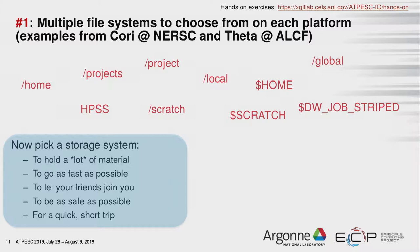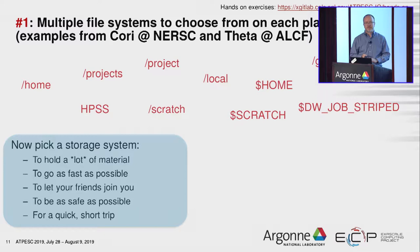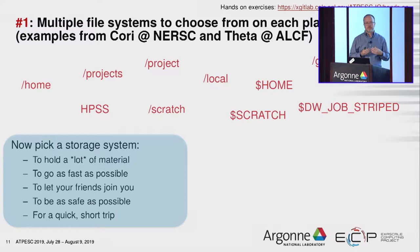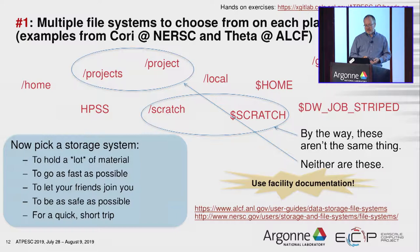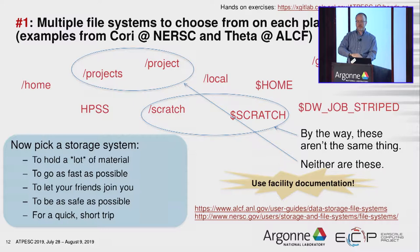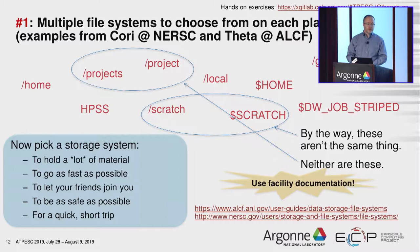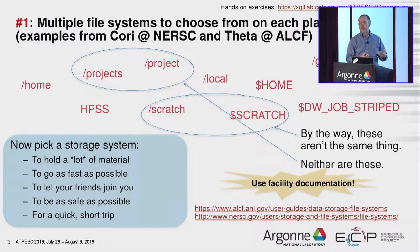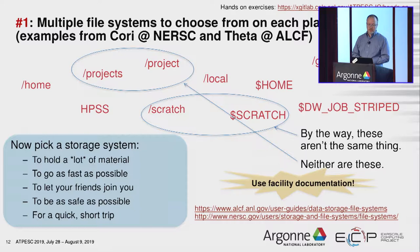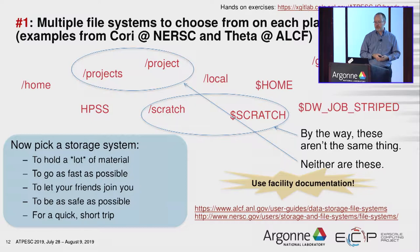The storage systems available at NERSC and ALCF all have different names — project, projects, local, global — and if you just saw these names, it's not obvious which is the fastest, safest, or best for sharing. The takeaway is: read your site's documentation. Every big computing center will have a table that lists their file systems, what they're good at, how big they are, and how fast they are. Be careful when going from site to site because naming is not consistent — NERSC and ALCF each have something called 'project' but they don't serve the same role. Don't make assumptions; look at the documentation.